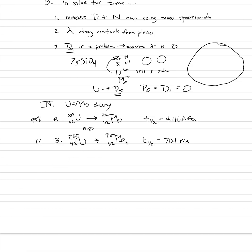Looking at uranium-235 decaying to lead-207, notice how much the mass and atomic number change. This loss of mass means there's a complex multi-step decay process. Before any decay starts we have uranium-235, which decays to thorium-231. That's a mass drop of four, so it must be an alpha decay — one of those helium nuclei. Uranium-231 is not stable and decays via beta decay to protactinium.